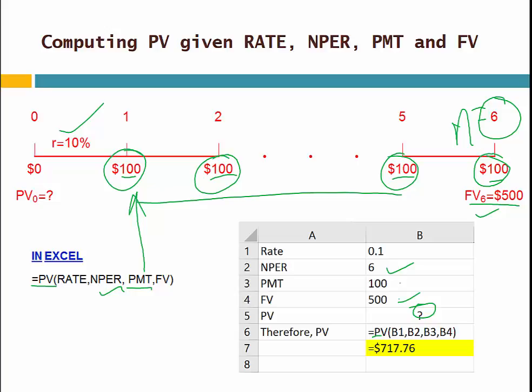If you input those values and hit enter, you get this number. Notice that you might get this number as negative. There was a negative in my answer too, but I just put it positive and I'll explain that concept later. It's so simple — we can use this Excel built-in function and find the present value.